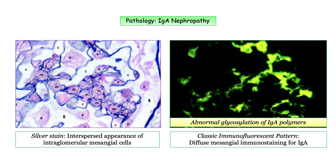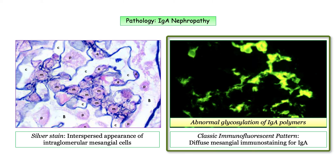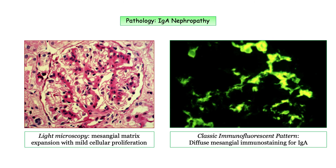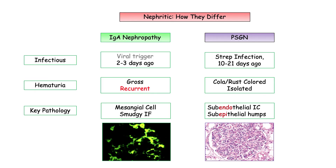This is what happens in IgA nephropathy: IgA polymers are thought to be abnormally glycosylated, and it is these abnormal IgA polymers that are taken up by the mesangial cell. In the immunofluorescence image, immunostaining for IgA renders a classic image you will need to be familiar with. Light microscopy shows mesangial expansion, but without the immunofluorescence you wouldn't know these represent IgA deposits. And that is it for the pathology of IgA nephropathy.